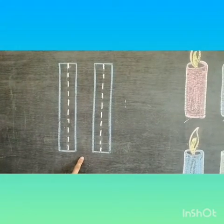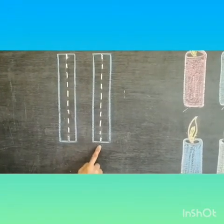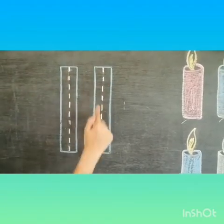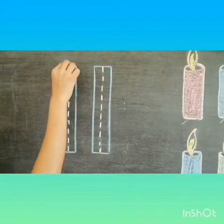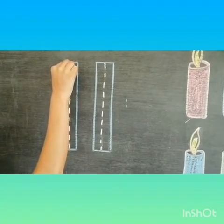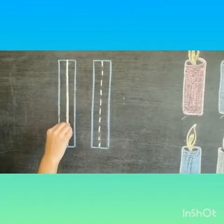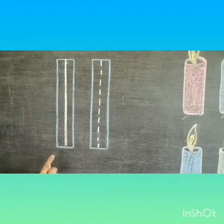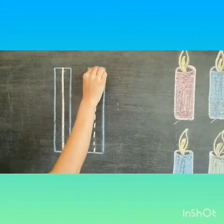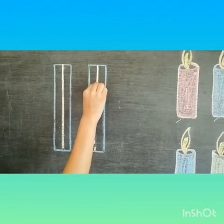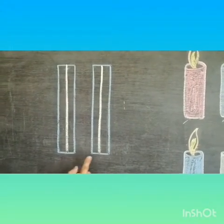35. So children, this is number 11 — 1, 1, 11. Now you can see dotted lines here. We will trace this dotted line. Okay children, let's start. Standing line. One more standing line. One more standing line. One more standing line.